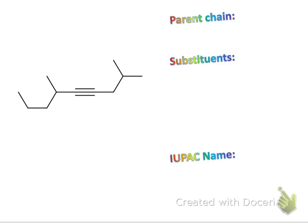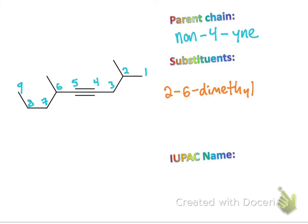Up next we have an alkyne. We want to number it so that we get to our triple bond as soon as possible: 1, 2, 3, and remember the triple bond-single bond interface — both count as carbons — so carbon 4, 5, 6, 7, 8, and 9. The parent name is non-4-yne. In terms of substituents, this one only has methyls: at positions 2 and 6, so 2,6-dimethyl. The full name is 2,6-dimethyl non-4-yne.